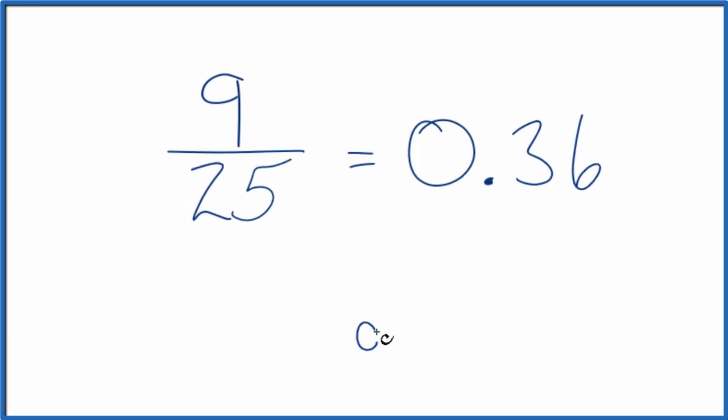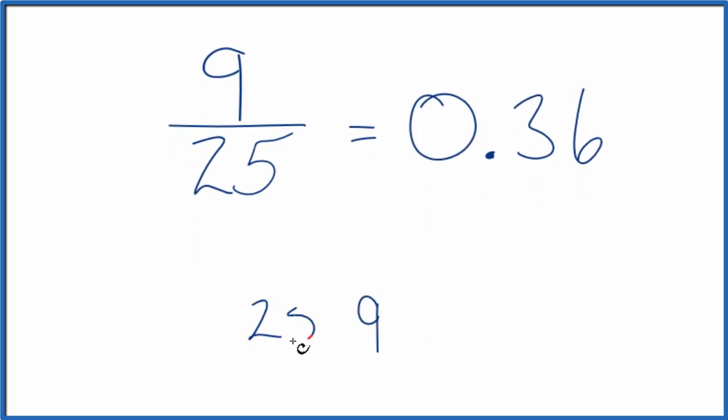You could also take 9 and see how many times 25 goes into 9. So we're going to divide 9 by 25 longhand. 25 doesn't go into 9. Let's put a zero here and put a zero with a decimal point.